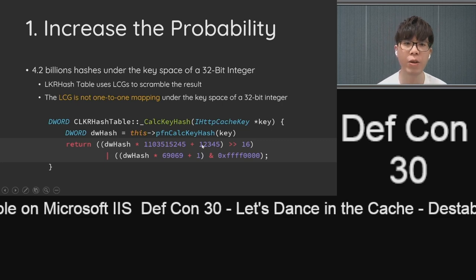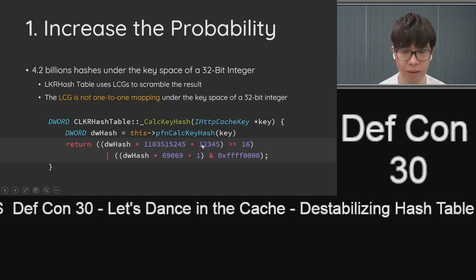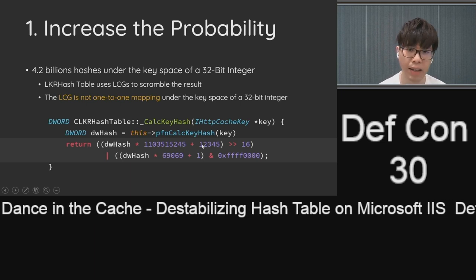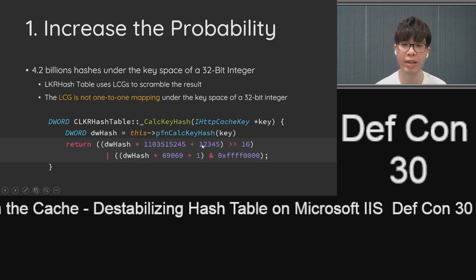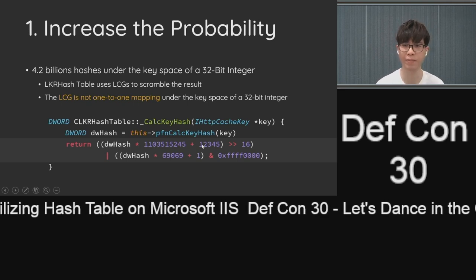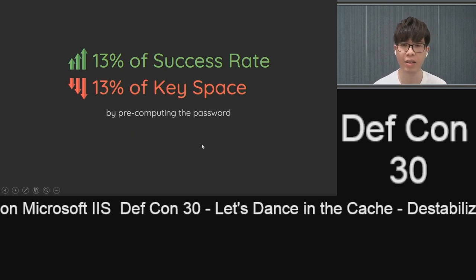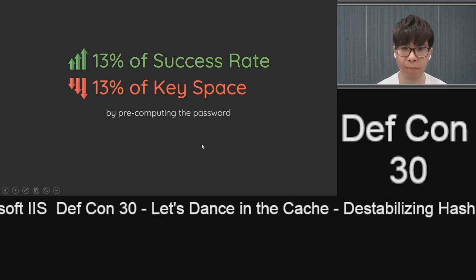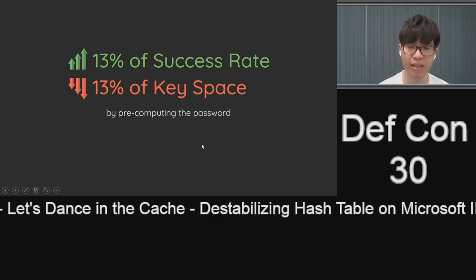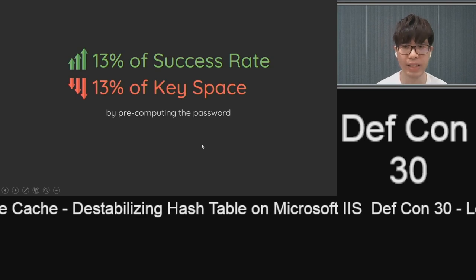To make this bug a more severe vulnerability, we developed several enhancements. The first is to increase the probability of collision. The LKR hash uses an LCG to make the result more random, but because of this LCG, we can lower the key space — the LCG is not one-to-one mapping under the 32-bit integer key space, so there are results that will never appear. We can pre-compute a dictionary that excludes passwords whose hash is not in the reachable results. This can reduce the key space, and although there are still billions of password records, we increased our success rate by at least 13%.